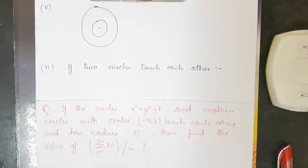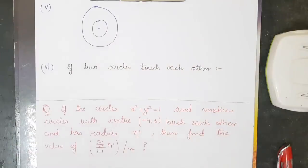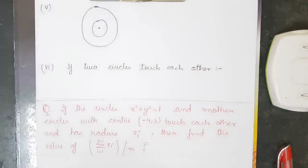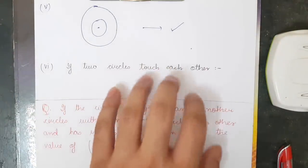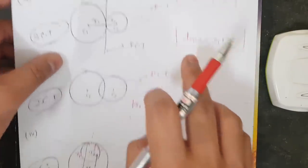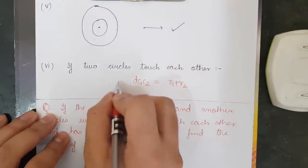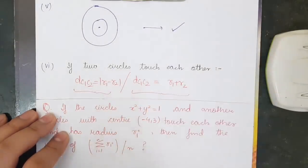The last case is when one circle is completely inside the other. If the circles are concentric (same center), there's no common tangent. If not concentric, similar analysis applies. Most importantly, if two circles touch each other, both conditions must be known: d(c1,c2) = r1+r2 for external tangency, and d(c1,c2) = |r1−r2| for internal tangency.